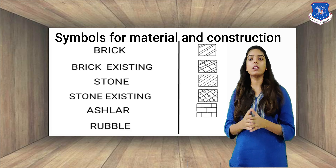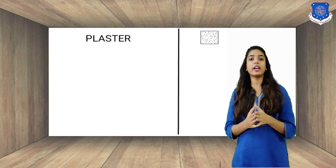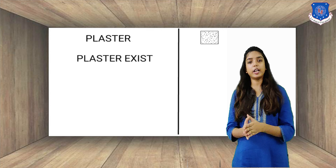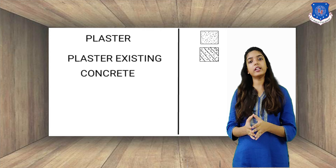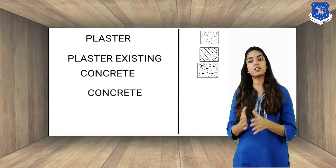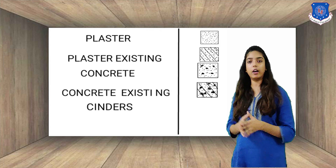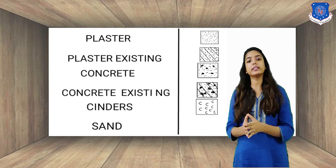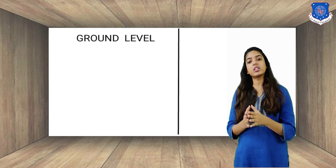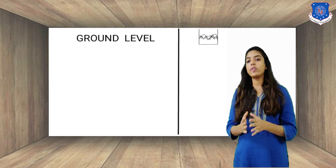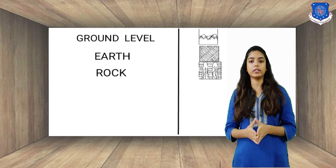For example, if you want to showcase a brick wall, then you have to use brick hatch patterns in walls. As you can see on the screen, there are multiple types of different materials like plaster, concrete, sand, earth, tile, etc., each with its architectural sign used in technical drawings.